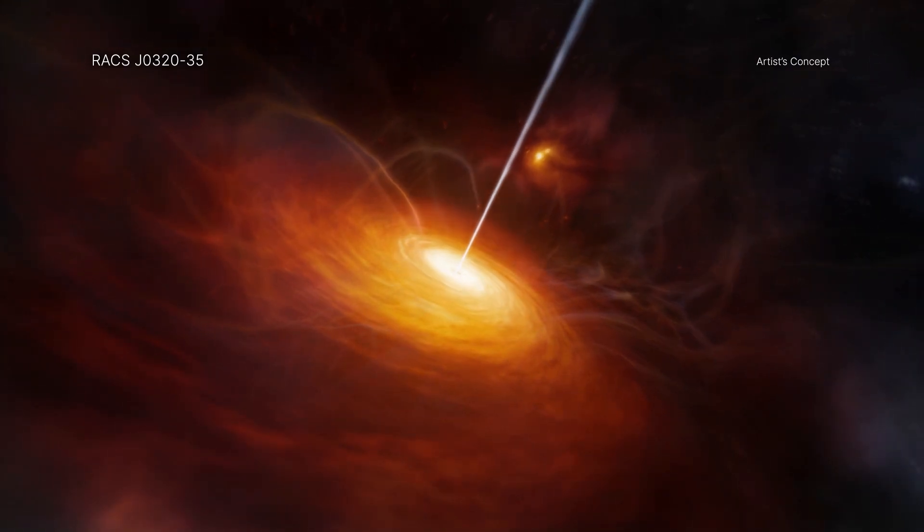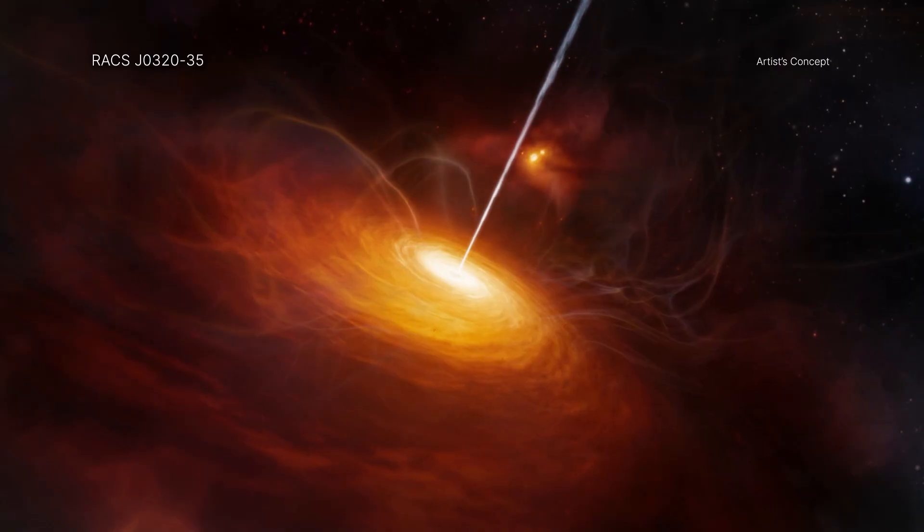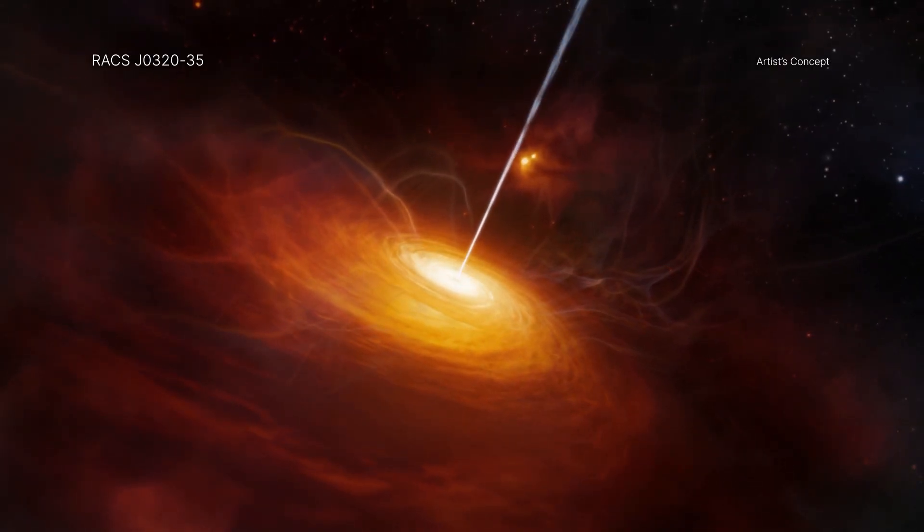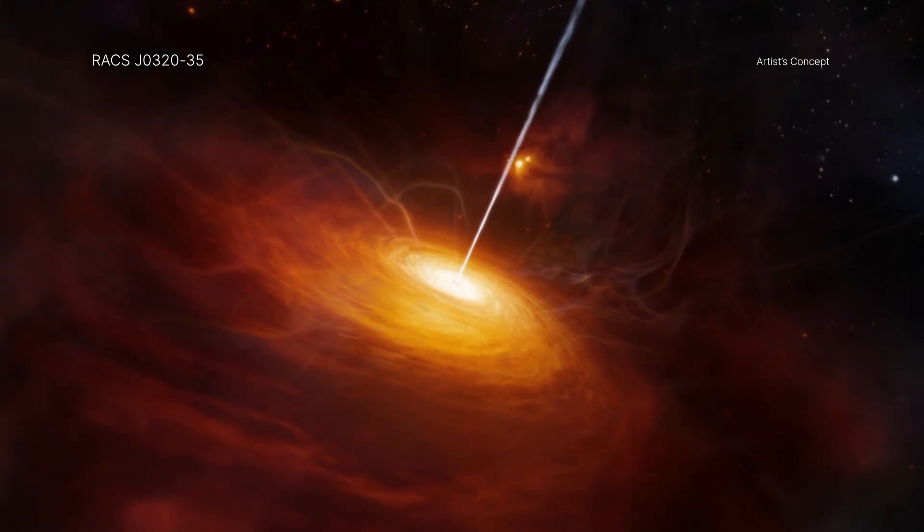This gives a limit on how quickly matter can typically fall toward a black hole, called the Eddington rate.